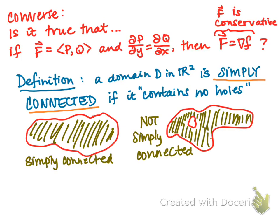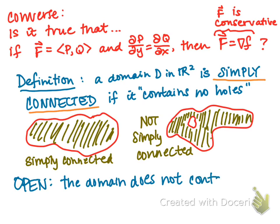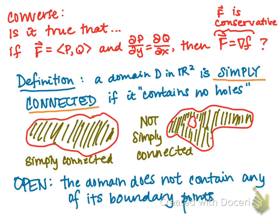I'll also define what it means for a domain to be open. A domain is open if it does not contain any of its boundary points. Another way to say that is: for every point P in the domain, there exists a disk entirely within the domain centered at P.